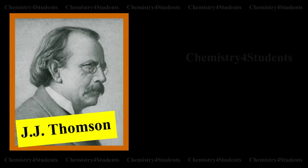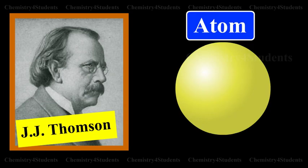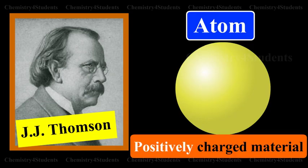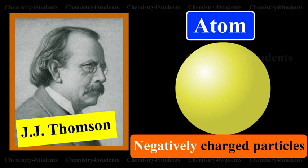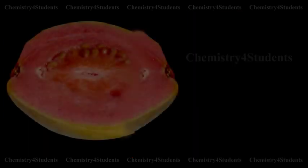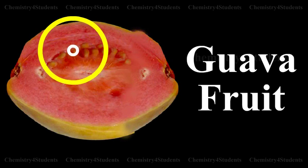J.J. Thomson proposed that an atom was a solid sphere of positively charged material and negatively charged particles. Electrons were embedded in it like the seeds in a guava fruit.